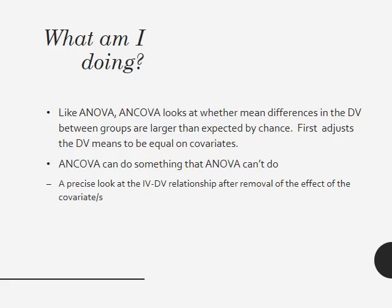When you're running an ANCOVA, it's like an ANOVA in that it looks at whether the mean differences in the dependent variable between the groups are larger than expected by chance. But before it does that ANOVA, it adjusts the dependent variable so that the scores for everybody are more equal based on the covariates. The ANCOVA can do something the ANOVA can't — it gives us a precise look at the relationship between the independent variable and the dependent variable after removing the effects of the covariates.